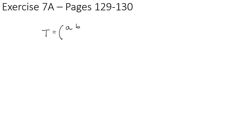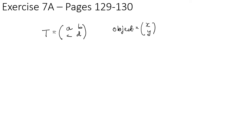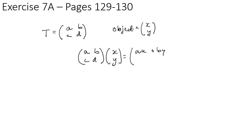Now do exercise 7B on pages 129 to 130. As a reminder: if our transformation matrix is [[a, b], [c, d]] and the object points are (x, y), then applying the transformation gives (ax + by, cx + dy). Also, if you have a group of coordinates, put each coordinate as a column of a matrix so you only need to do a single matrix multiplication to find all the image points.